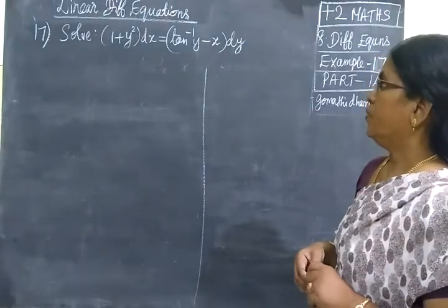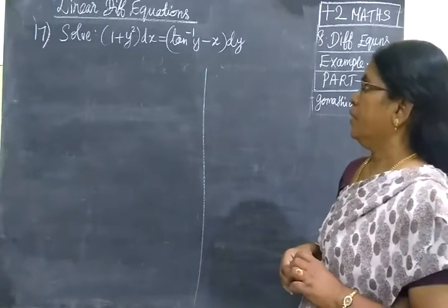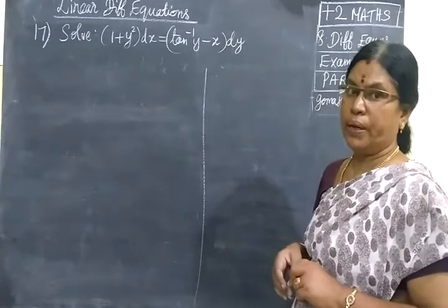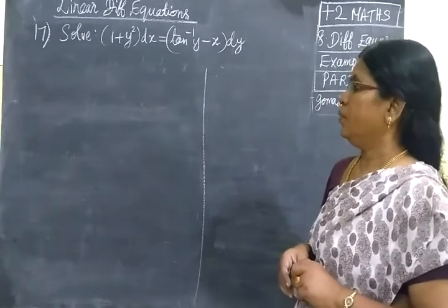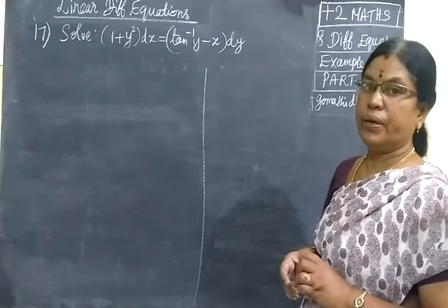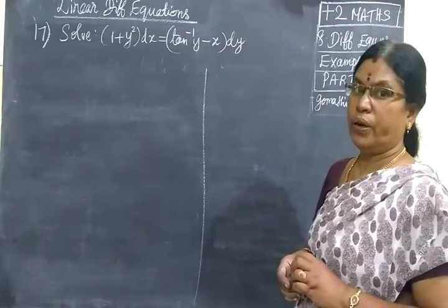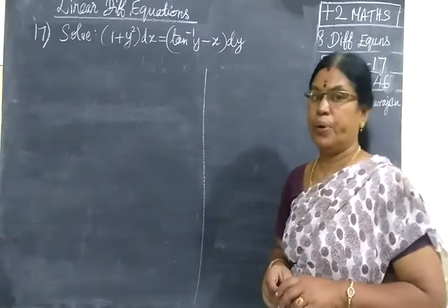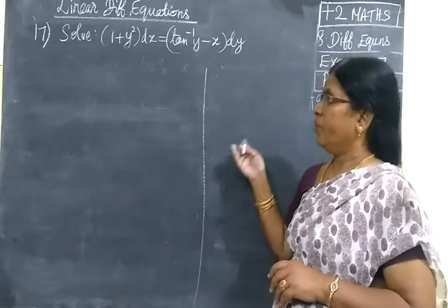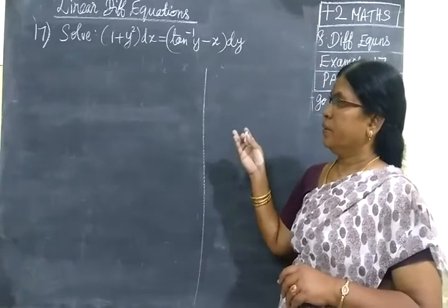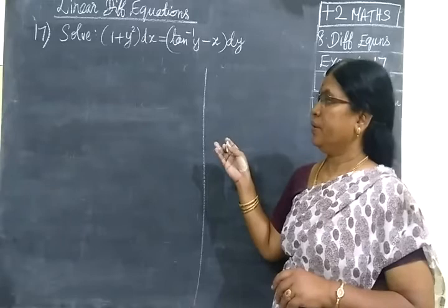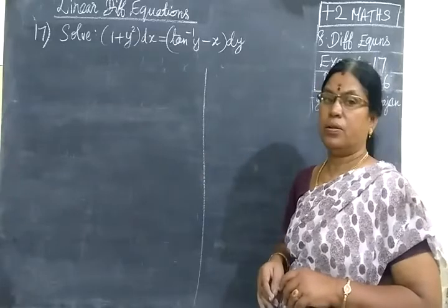First, we have to write in the form dy by dx or dx by dy and see whether it is a linear equation in x or y. Then, we identify p and q. Then, we find the integral of p dx, that is the integrating factor e to the power of integral p dx. Then, the solution.